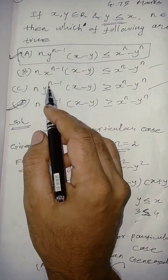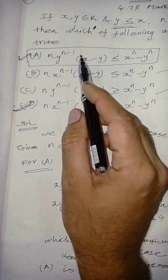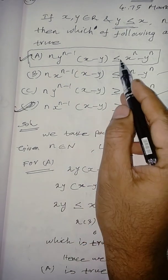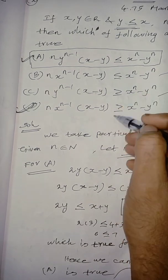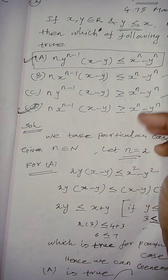N, y power n minus 1, x minus y, here first two options are less than or equal to inequality given, remaining C and D option are greater than or equal to. So, that is the difference.